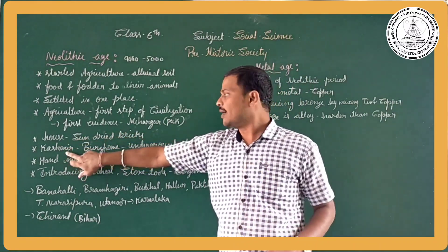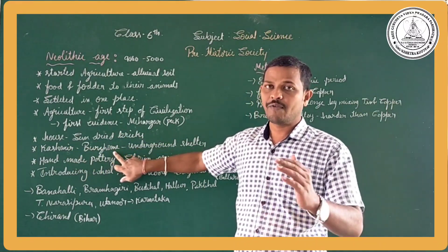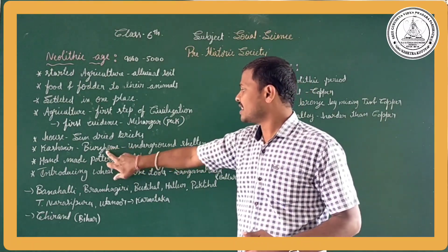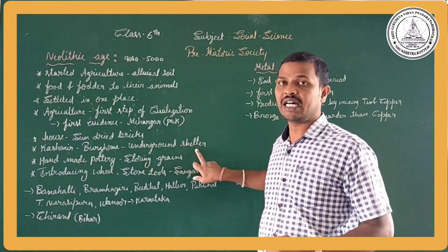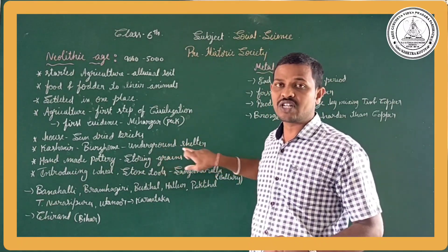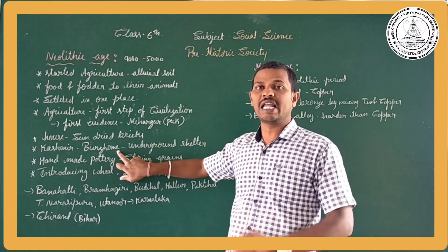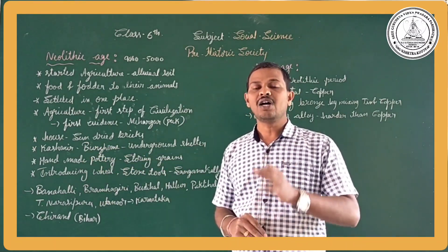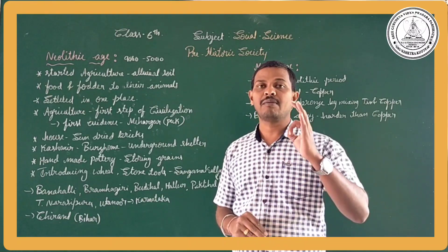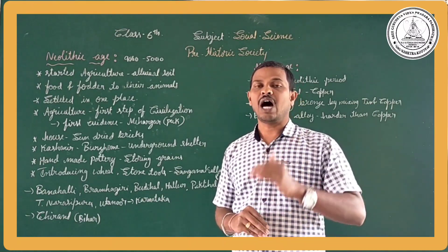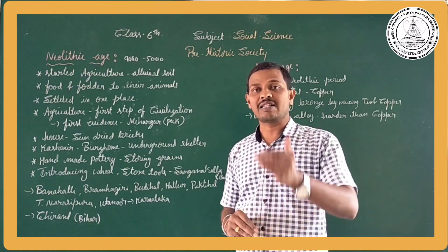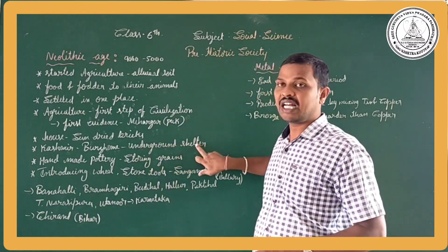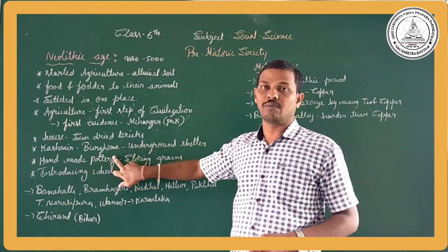In Kashmir we found the Burj home. The Burj home is essentially called an underground shelter. We know that Kashmir is one of the coldest areas, with very cold conditions, so almost all of the people settled underground. These underground shelters or underground houses are called Burj homes.